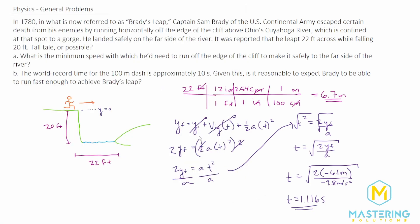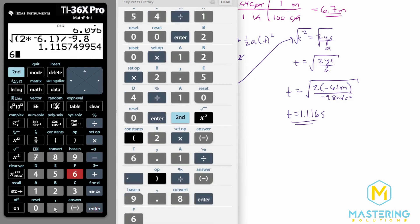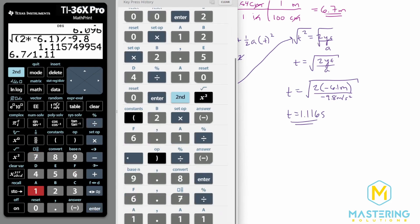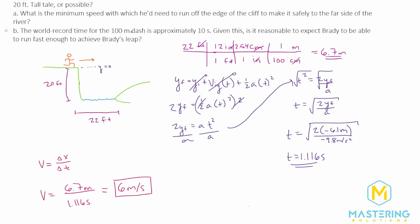Now that we have the time, we can figure out the speed needed to clear the gap. Velocity equals the change in x over the change in time. So v equals 6.7 meters divided by 1.116 seconds, which equals 6 meters per second. This is the answer for part A — the minimum speed he'd need to run off the edge of the cliff to make it safely to the other side.